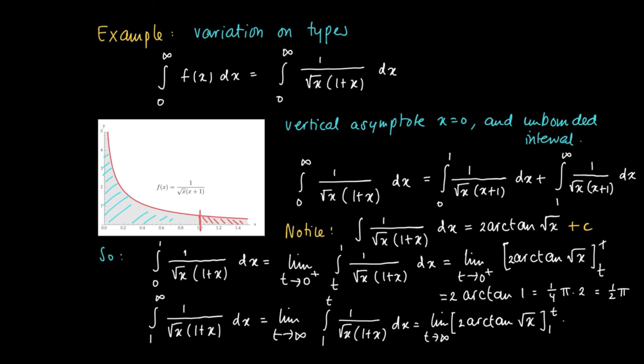In this case, as the limit for t to infinity, 2 arctan(√t) goes to 2 times π/2, which is π, minus π/2 from the lower bound. This equals π/2.